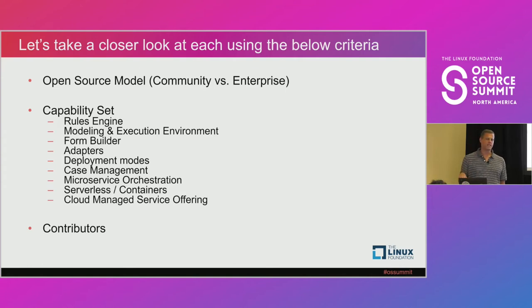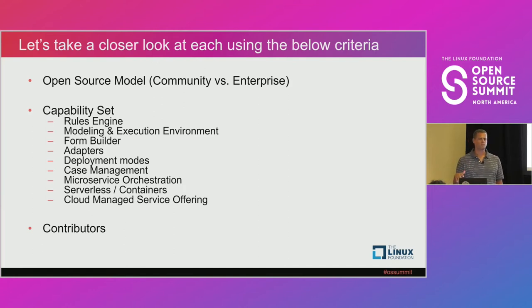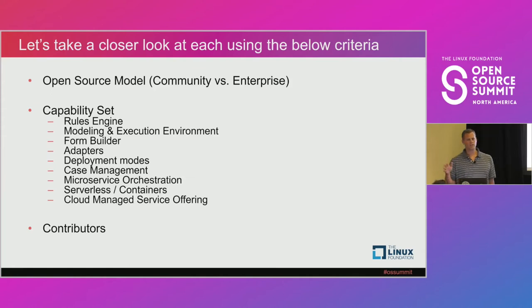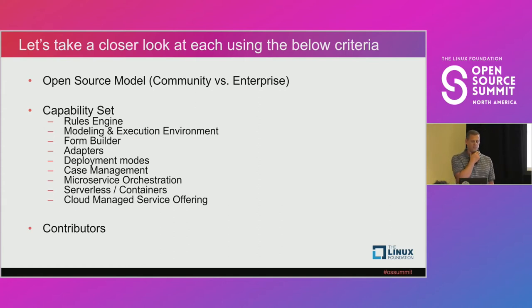We'll do a deeper dive on four of the products, looking at three dimensions. First, the open source model — very important to understand because each BPM product has a different open source model, and it can be confusing. You want to understand what you get from community versus enterprise. Second, the capability set — things like rules engine, modeler, deployment modes, cloud managed services. Third, community activity — contributors, commits, how active is the project.